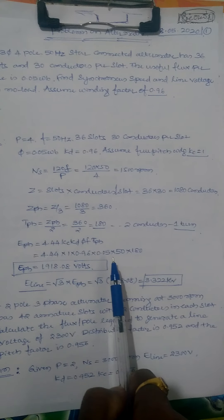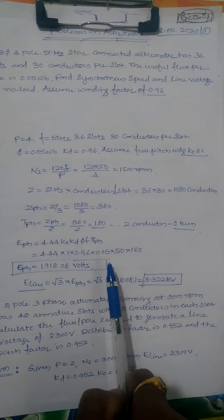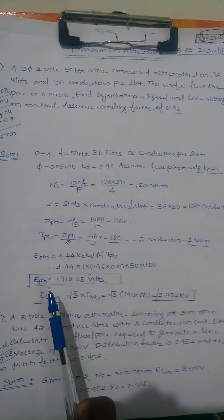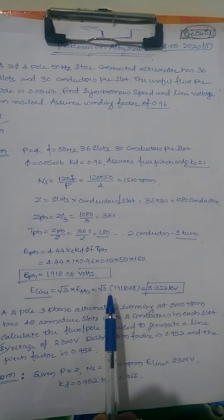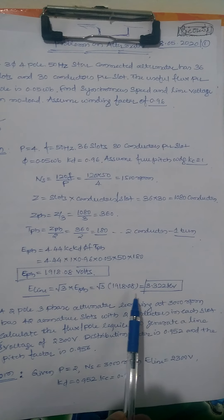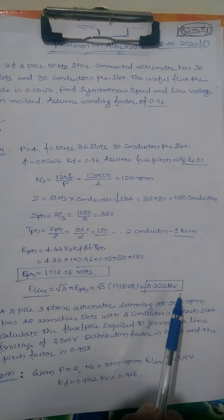This is the phase voltage. Once you get the phase voltage, easily calculate line voltage. Line voltage equals root 3 times phase voltage: root 3 into 1918.08, that is 3.322 kilovolts.